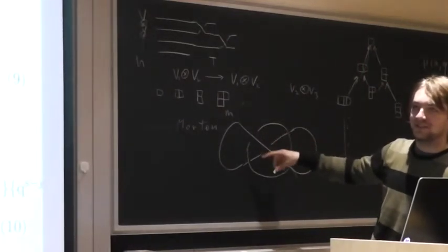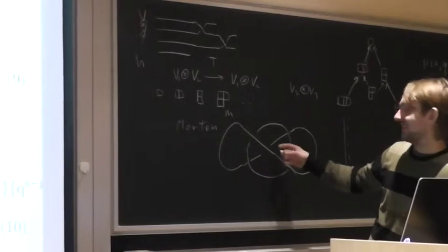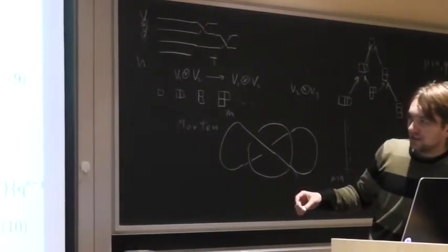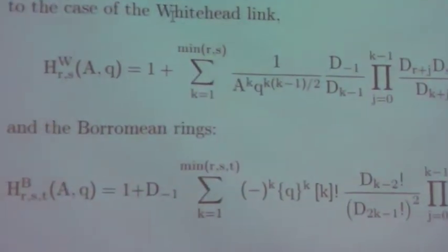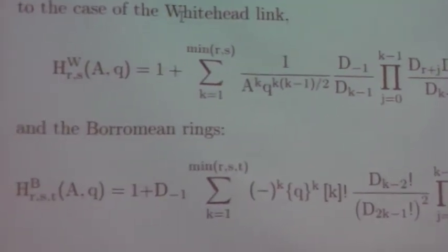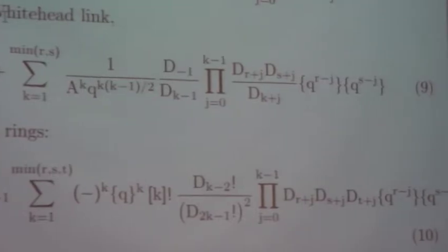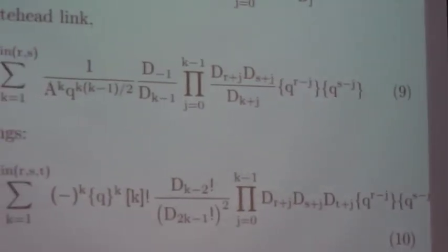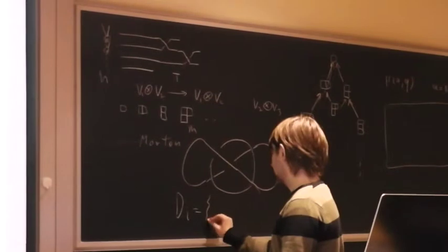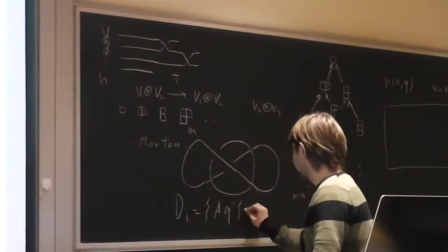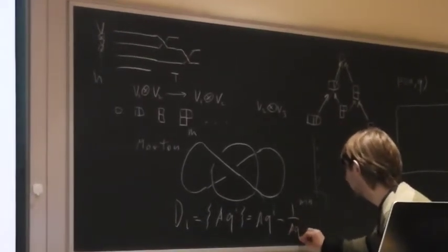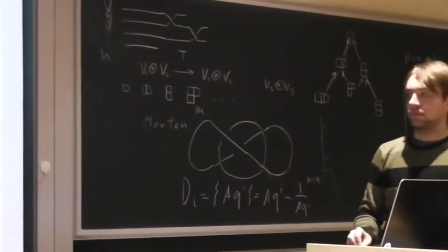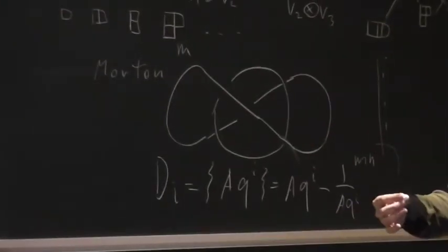Also there is a three-component link which is called the Borromean rings, and it also has the form of q-hypergeometric series. There is no notation for d, sorry for that. And d_i is actually a q_i, which is q_i minus one over q_i. Otherwise the formulas get longer.